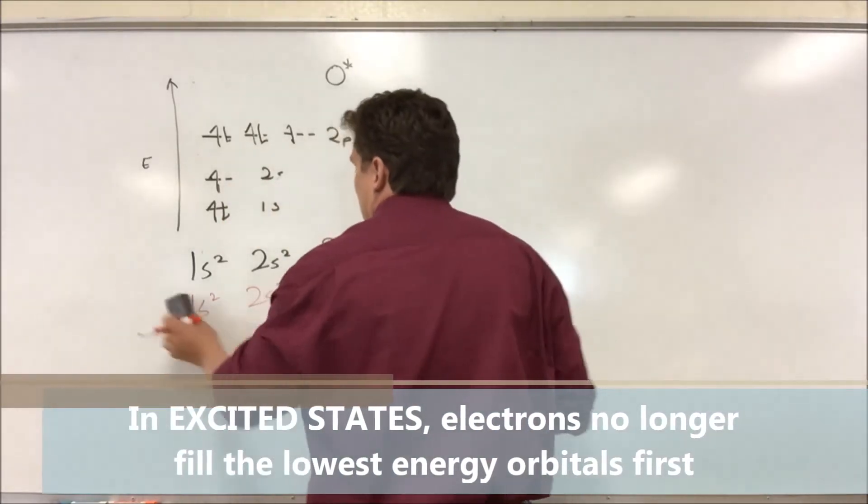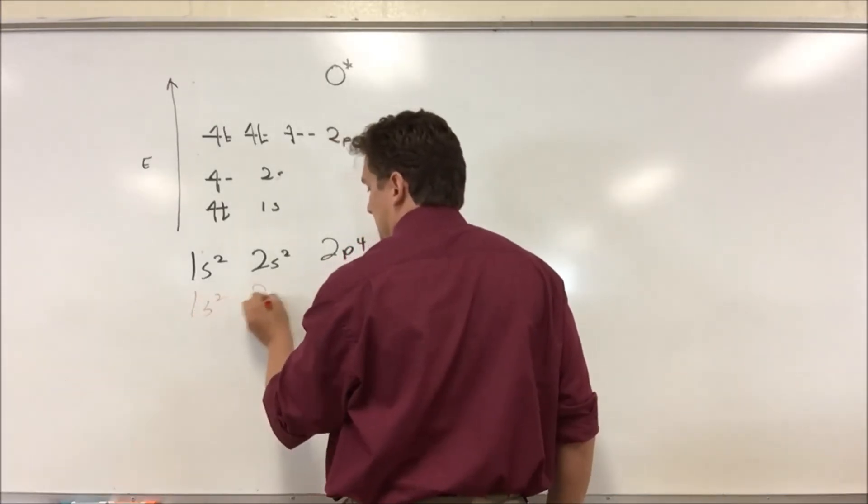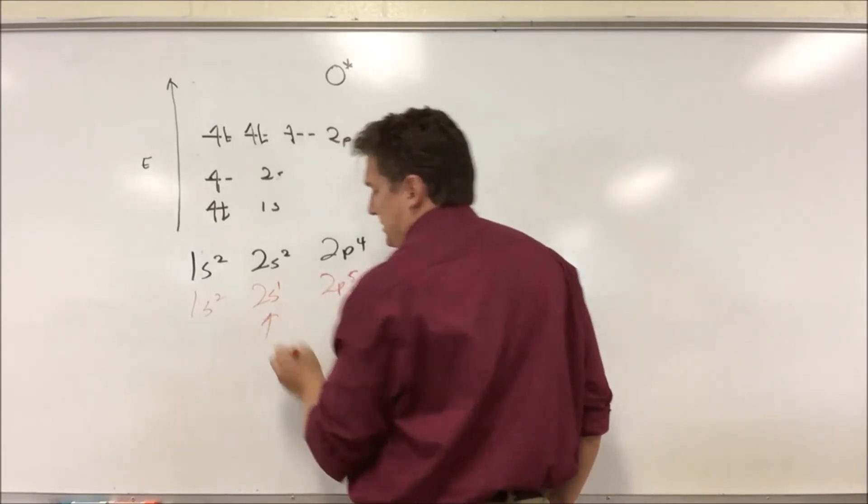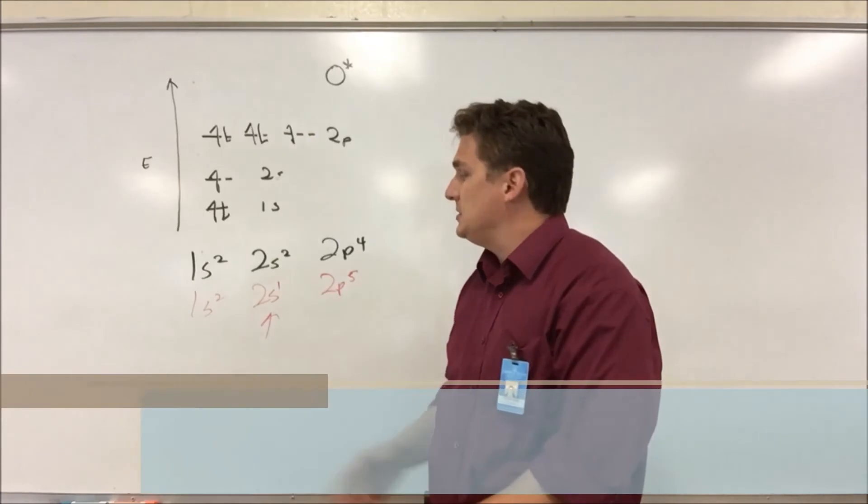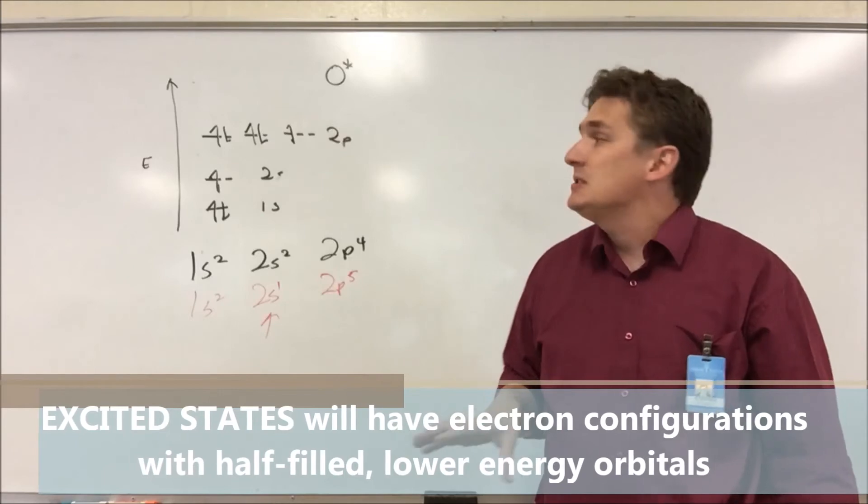The way it's going to look in terms of our electron configuration is that we're going to see half filled or not completely filled orbitals. So in this case, the 2s shell is not completely filled. We're not following our rules. So this is what excited states look like.